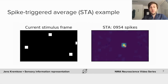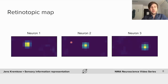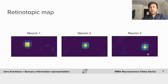This is how we can measure receptive fields. Just to illustrate the retinotopic map, I plot here the receptive fields of three simultaneously recorded neurons. Neuron one has a receptive field on the left, neuron two in the center, and neuron three on the right — illustrating the concept of the retinotopic map.